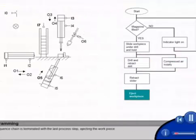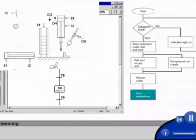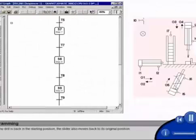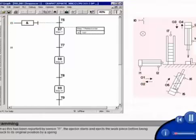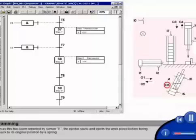Our sequence chain is terminated with the last process step, ejecting the workpiece. When the drill is back in the starting position, the slider also moves back to its original position. As soon as this has been reported by sensor I1, the ejector starts and ejects the workpiece before being pulled back to its original position by a spring.